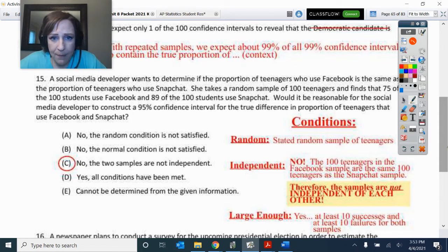So this problem happened because this particular social media developer took a random sample of 100 teenagers and found that 75 of the 100 use Facebook and 89 of the 100 use Snapchat. Right there lies the problem. She got two separate proportions from one sample of 100 students. That was not two independent samples. It was one.